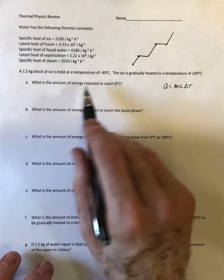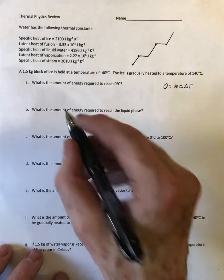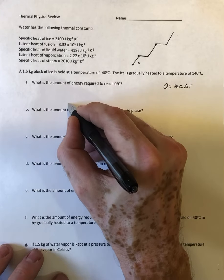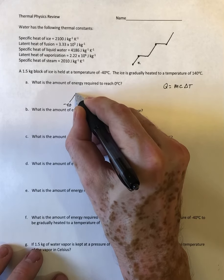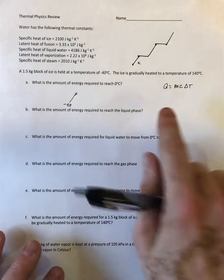What I'm looking at here is what is the amount of energy required to reach zero degrees. This is this first part right here, going from negative 40 up to zero. I'm not turning into a liquid at this point but I'm just heating, so we're going to use this equation Q equals M specific heat change in temperature.